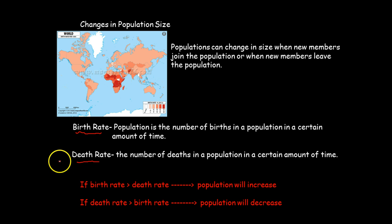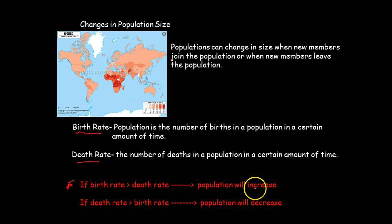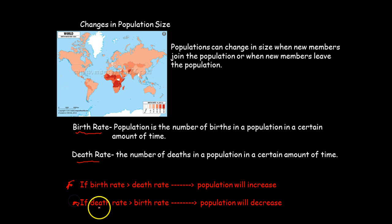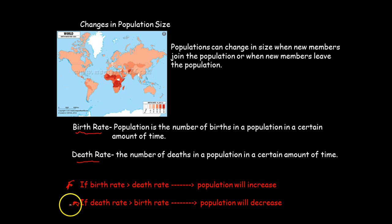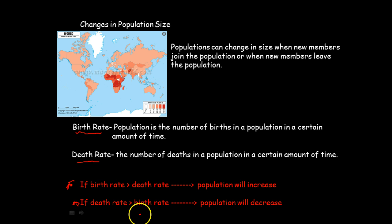One really important way to remember this: if the birth rate is greater than the death rate, the population will always increase. The opposite is also true — if the death rate is greater than the birth rate, the population will decrease. Any time you have more being born, it's going to increase; if you have more that are dying, the population is going to decrease.